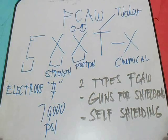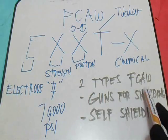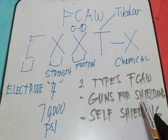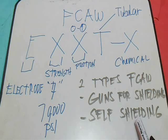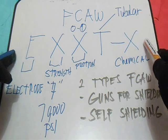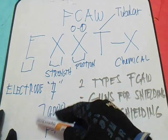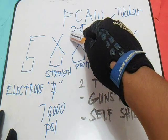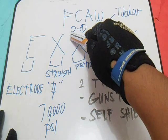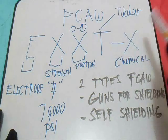Let's review. FCAW stands for Flux Core Arc Welding. There are two types of FCAW: gas shielding and self-shielding. The FCAW electrode identification system is E, X, X, T, and X. E means electrode; the first X is strength — 7 means 70,000 PSI; the second X is position, where 0 is for flat or horizontal and 1 is any position; T means tubular; and the final X refers to chemical and operating characteristics.